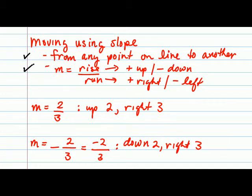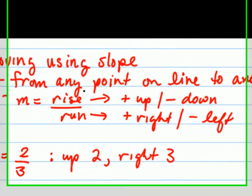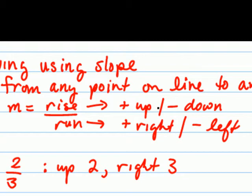To move using the slope, we should think of the slope as being the rise over the run. The rise indicates a movement in the up or down direction. So if the numerator is positive, that's telling us we should move up the corresponding number of units. If the numerator is negative, that's telling us to move down.